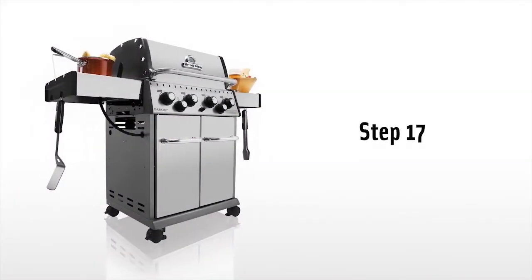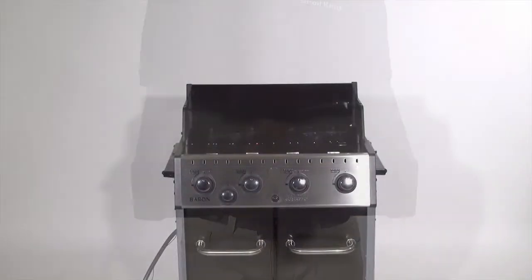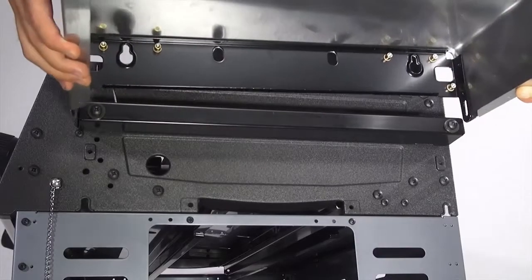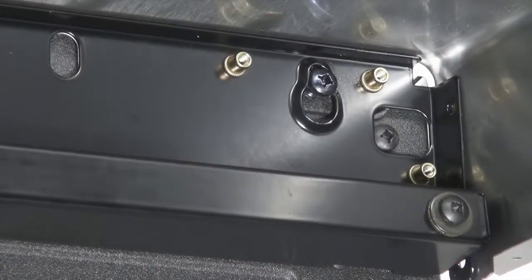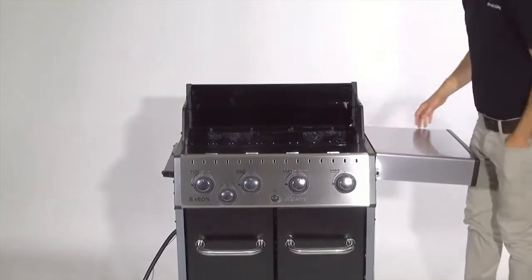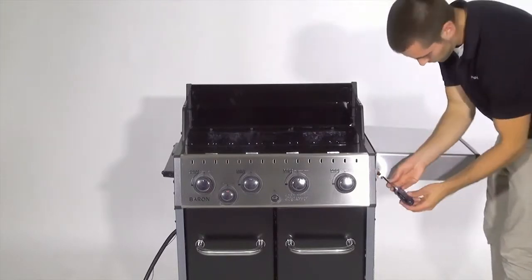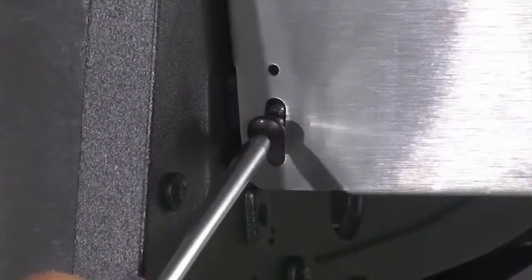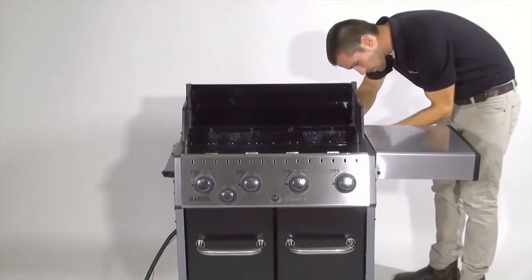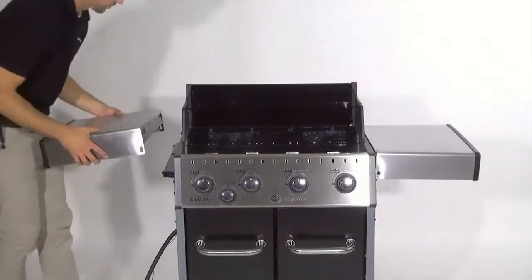Step 17. Attach the side shelf to the shelf bracket. Do not tighten the bolts that the shelf clips onto. Then remount the four screws to keep both side shelves in place. Do the same for the side burner shelf.